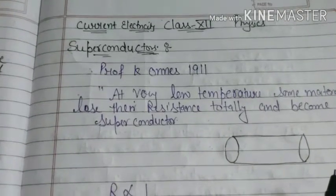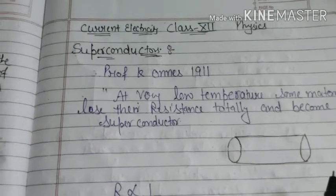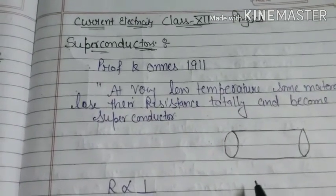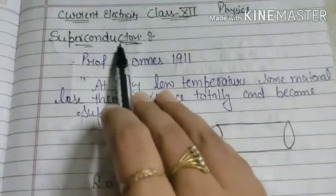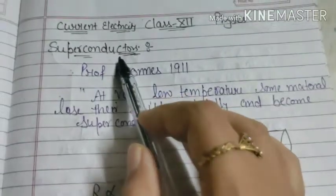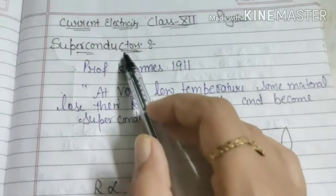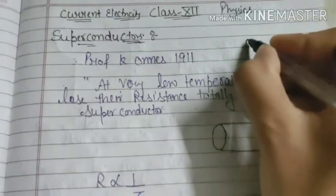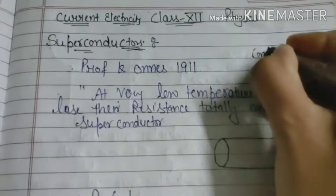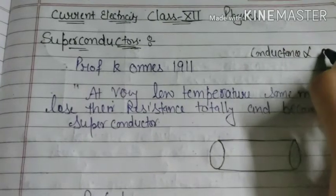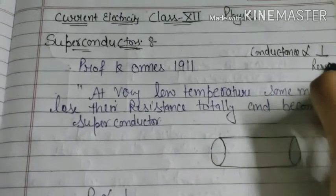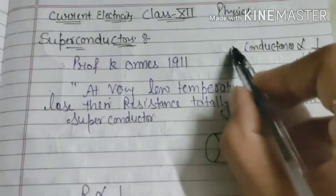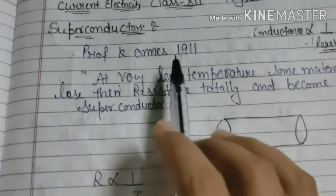Hello everyone, welcome to my YouTube channel. Today I am here with the next lecture of Class 12 Physics. In the last lecture we discussed the thermistor, and today our topic is superconductors. Superconductors means the conductors which are superb — they show superb conductivity, so that's why they are called superconductors. The resistance is low; conductors where resistance is low means conductivity will increase.